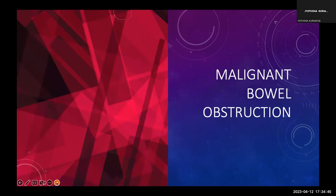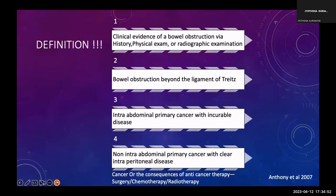We'll also cover some aspects of malignant bowel obstruction (MBO). The definition requires: clinical evidence of bowel obstruction via history, physical examination, and radiographic examination; documented obstruction beyond the ligament of Treitz; in a patient with an intra-abdominal primary with incurable disease, or non-intra-abdominal primary with clear intraperitoneal disease. This is either due to the cancer itself or as a consequence of anti-cancer therapy — surgery, chemotherapy, or radiotherapy.